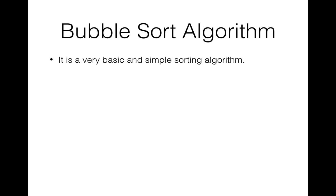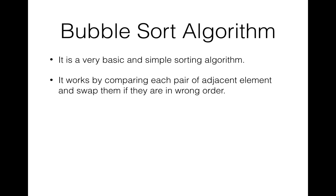Bubble sort is a very basic and simple sorting algorithm. It works by comparing each pair of adjacent elements and swapping them if they are in wrong order. The time complexity of bubble sort is O(n²), which means it's not suitable for large data sets. Bubble sort is generally used for very small data sets or for learning purposes; otherwise, bubble sort has no practical usage.